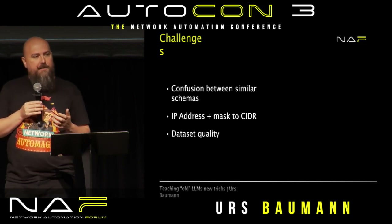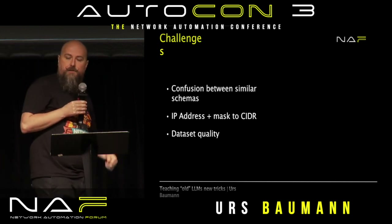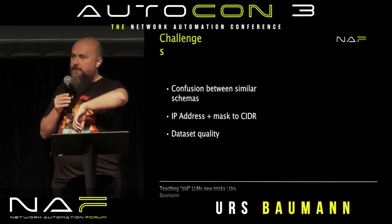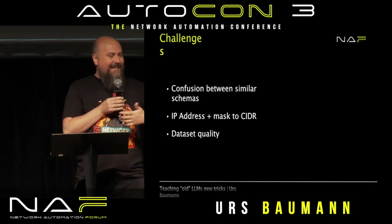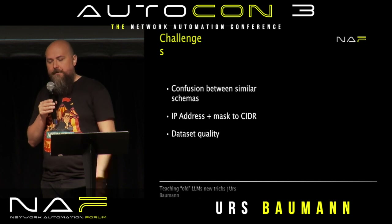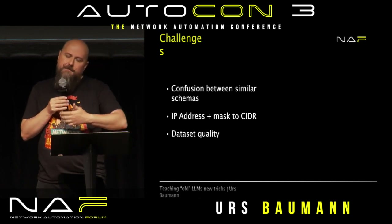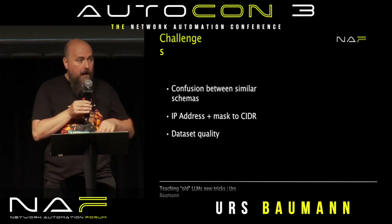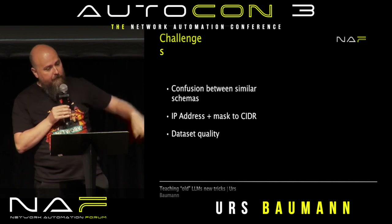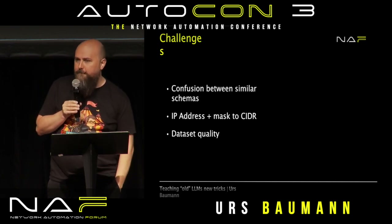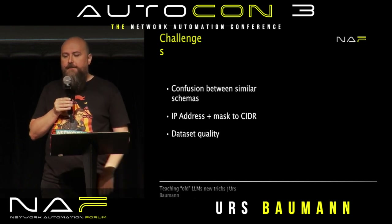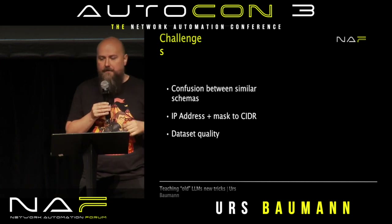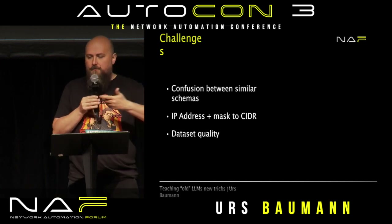Another challenge was IP address calculation — converting from a classical IP address and subnet mask to CIDR notation. Since it's an LLM, it guesses and tries to figure out what belongs where, which was a challenge. This could be optimized with more fine-tuning and more data — or, as I already see 80% of the audience thinking, just use MCP: allow a function to make the calculation and the LLM will handle the rest. The dataset quality was also an issue since I generated it myself, so I had to fix my own bugs to get to this point.